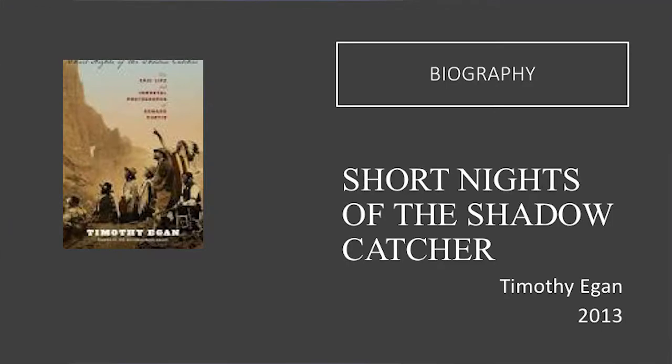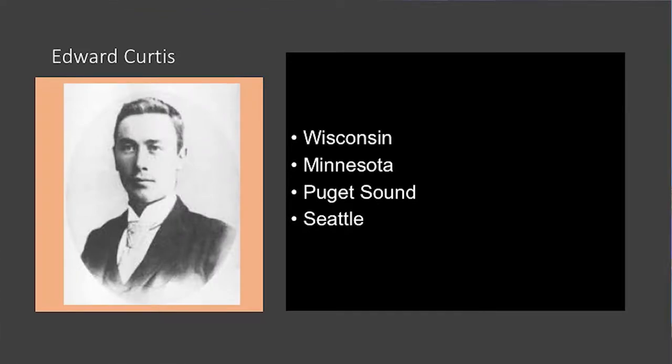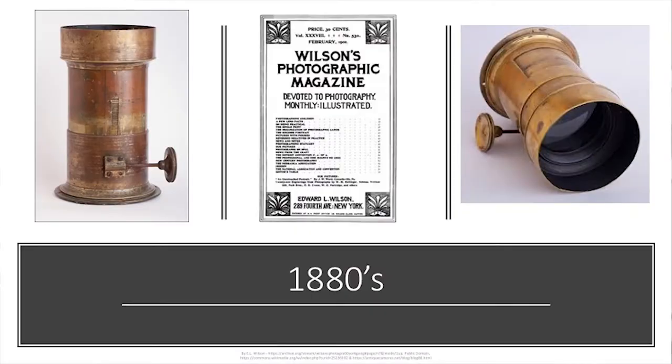Curtis was born in 1868 in Wisconsin, and his family moved to Minnesota when he was young. His father, a Civil War veteran, was in poor health as a result of his war service and worked only as a traveling preacher. Edward often joined him, going deep in the wilderness, developing survival skills, and being a great outdoorsman. His fascination with photography also began at an early age. Using the lens that his father brought back from the war and instructions from Wilson's Photographic Magazine, he crafted a rudimentary camera. At 17, he became an apprentice to a photographer in St. Paul, but within a couple of years, the family moved to Puget Sound in the Northwest.